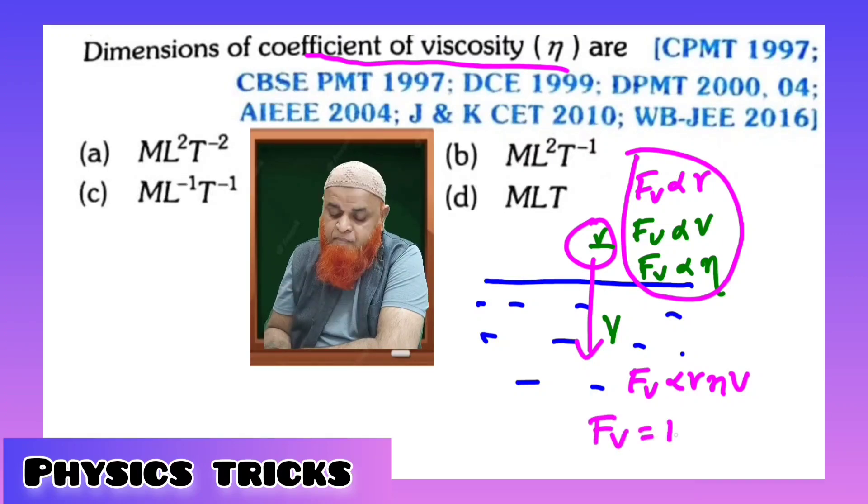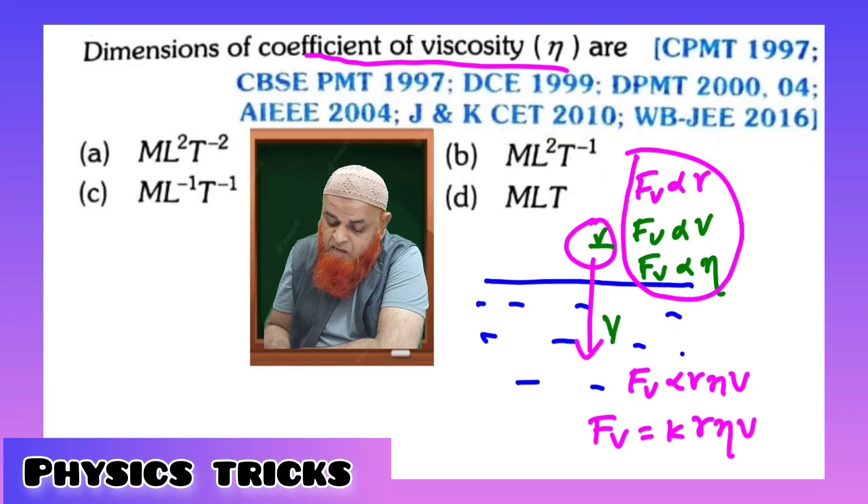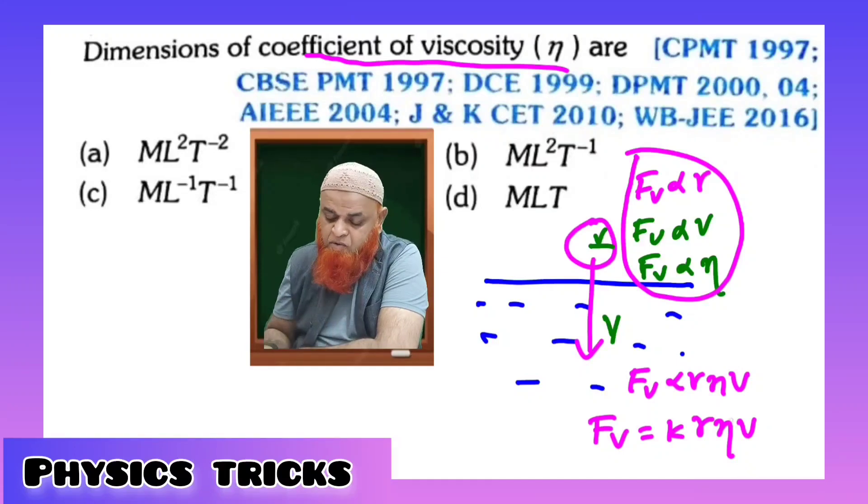So if you remove this proportionality, you will get a constant K, and you'll be writing K times R times eta times V. So with this formula, it is easy to remember the dimensional formula for coefficient of viscosity.